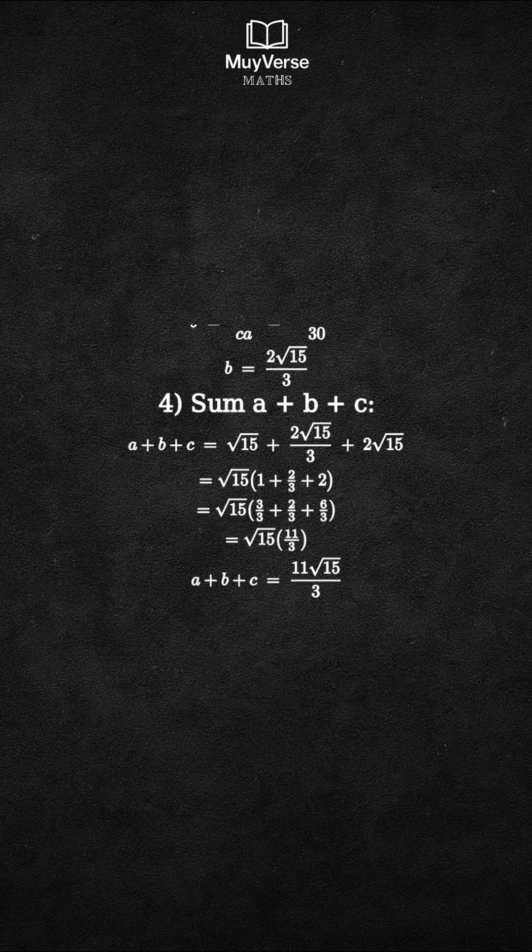1 is 3 over 3, 2 is 6 over 3. So the numerator becomes 3 plus 2 plus 6, all over 3, which is 11 over 3. Therefore, a plus b plus c equals 11 square root 15 over 3.